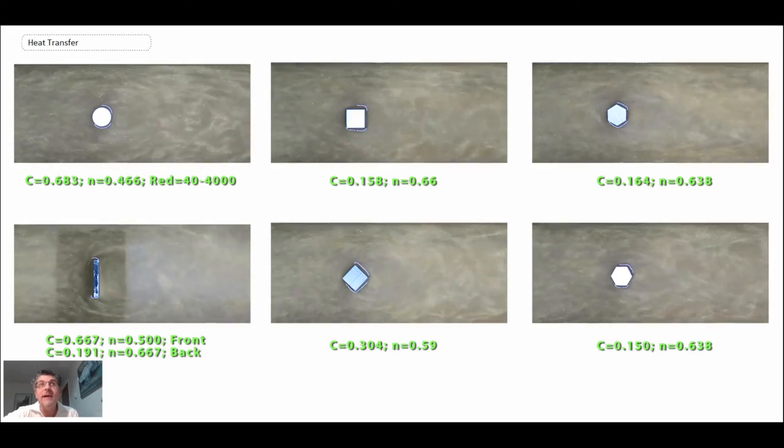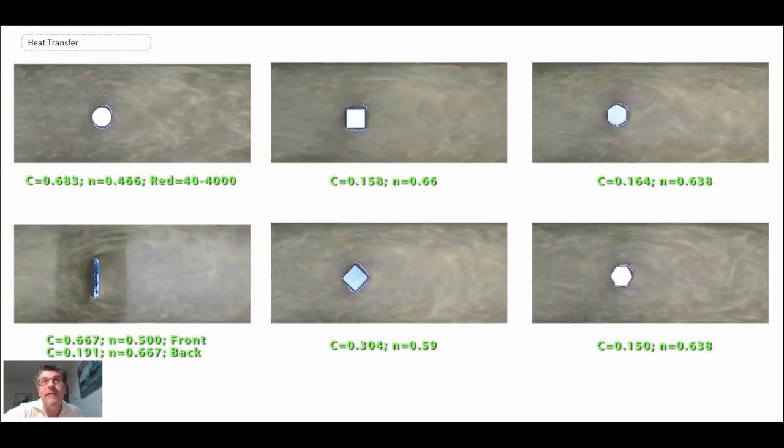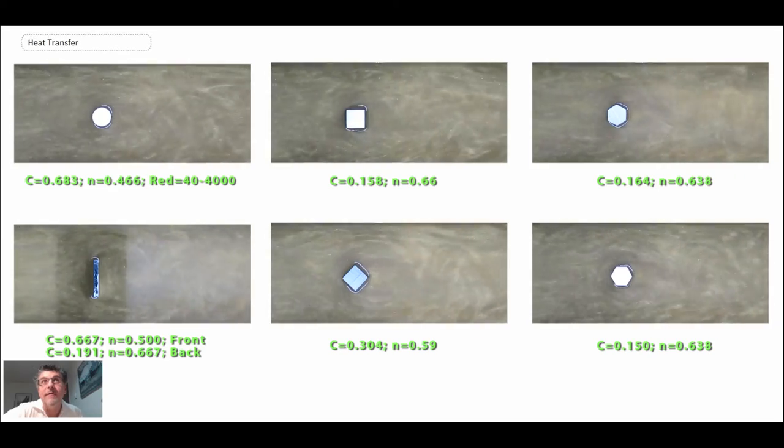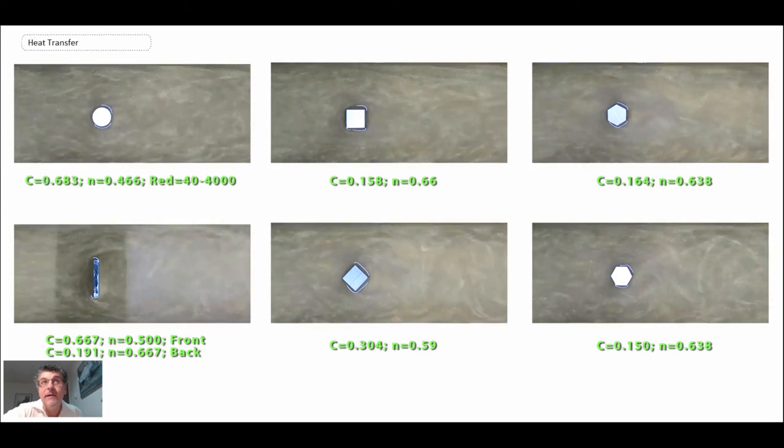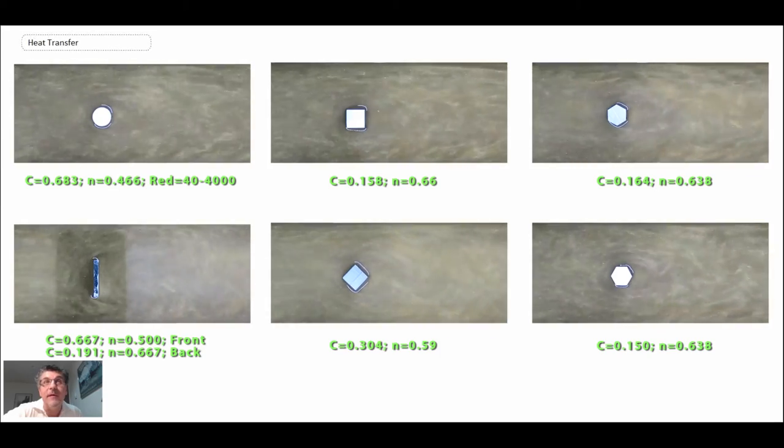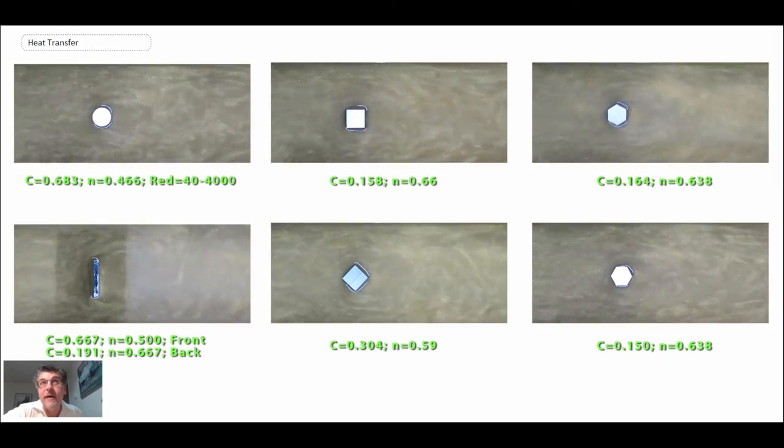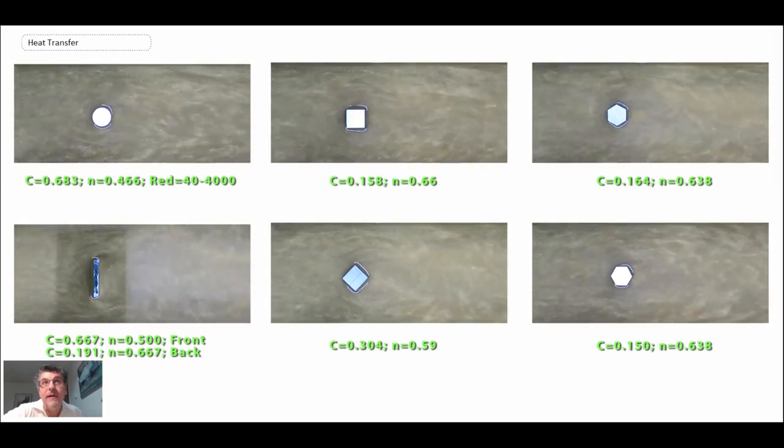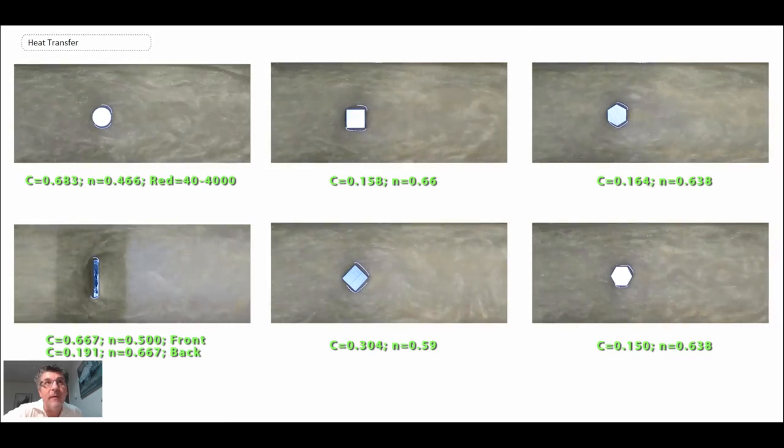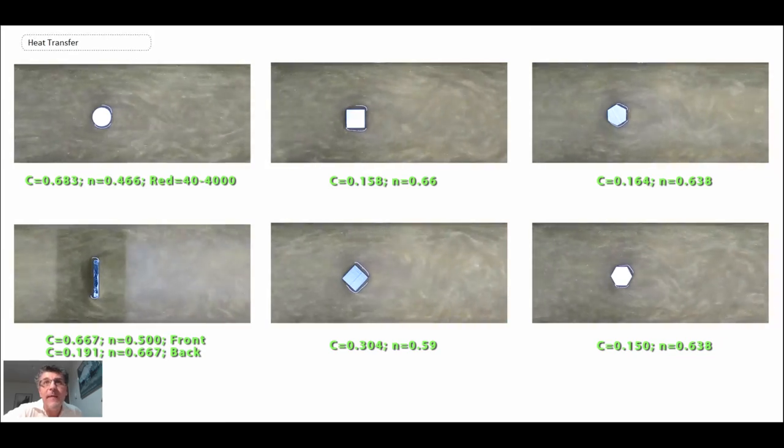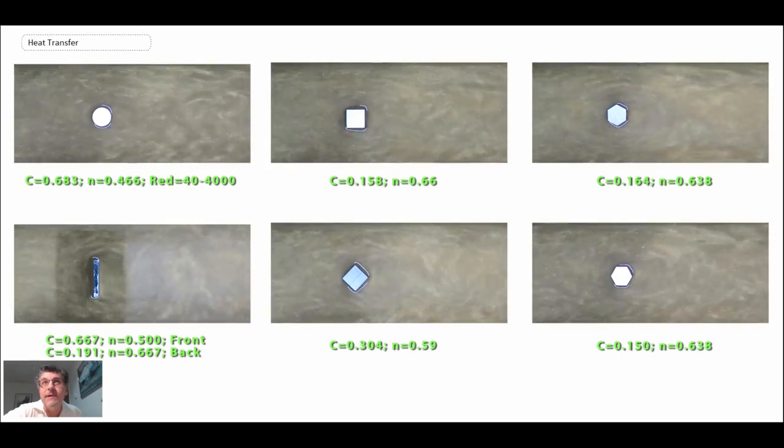So the main thing here, just watching these different flow visualizations, you can see the flow over these different bodies is very different. It depends upon orientation. We can see by examining, for instance, the cube. When it's aligned one way or rotated, very different dynamics downstream. And consequently the C and the N values will change, which is what people would determine from experiments. And again, the main thing, be careful about the Reynolds number that you're applying these correlations to.